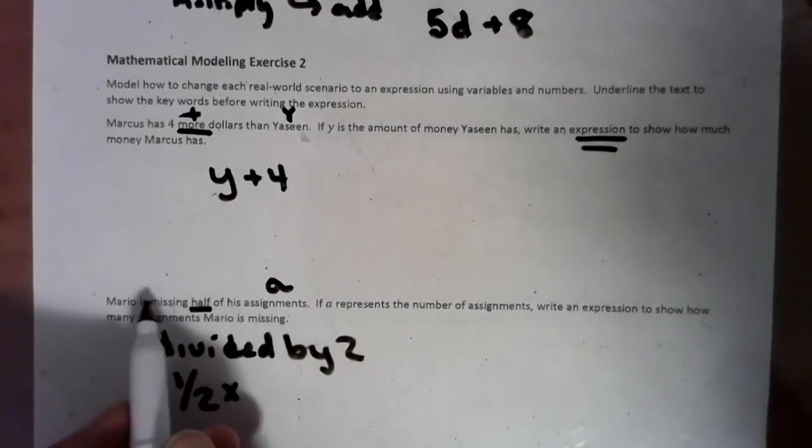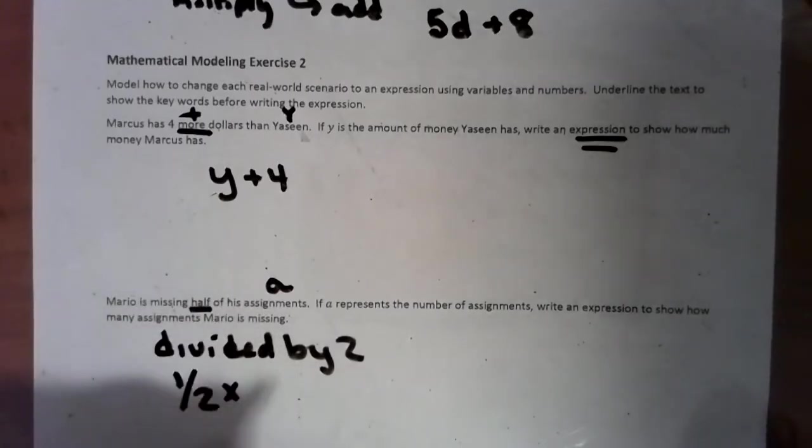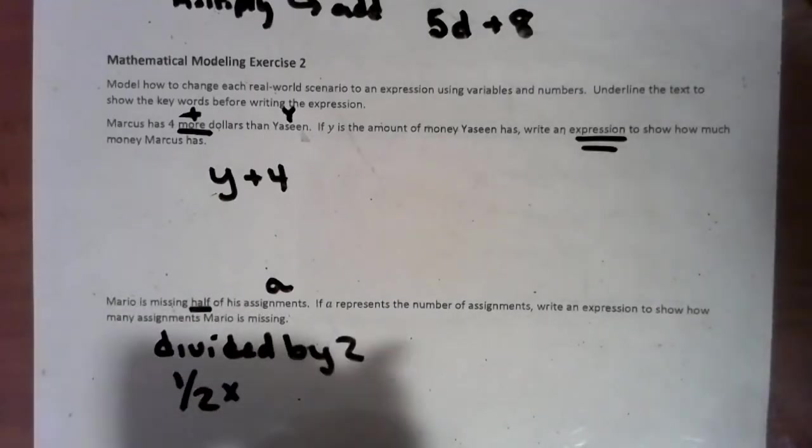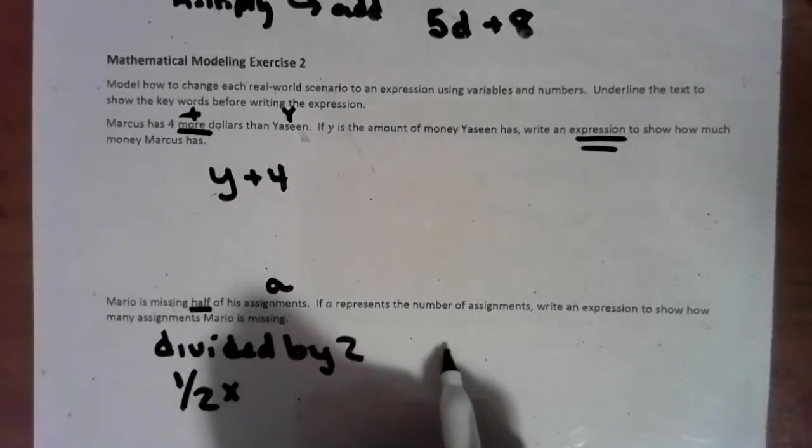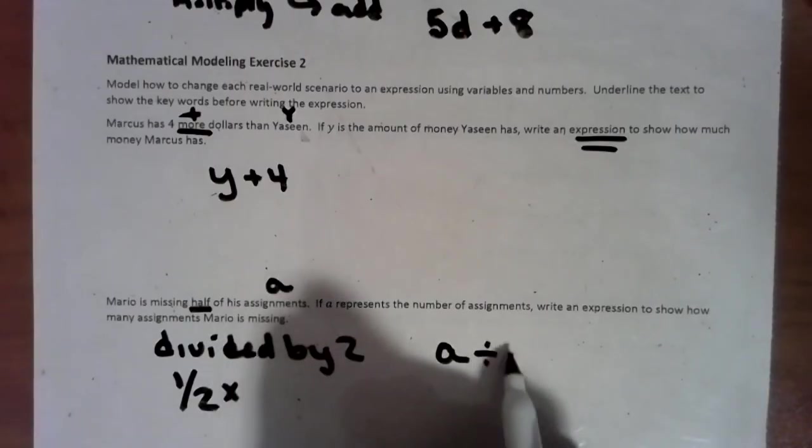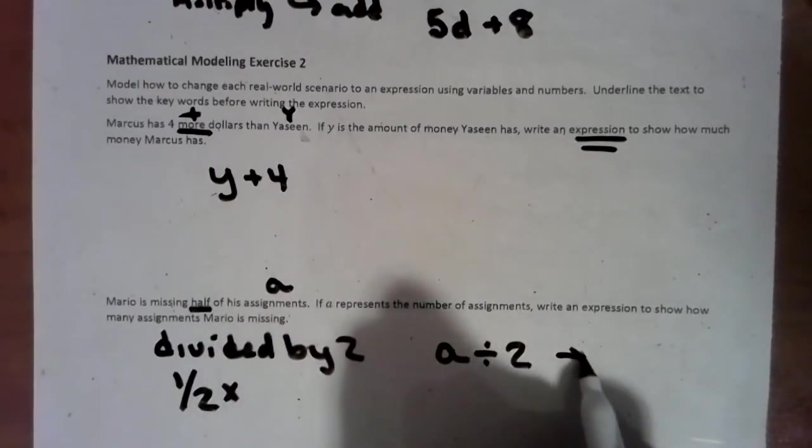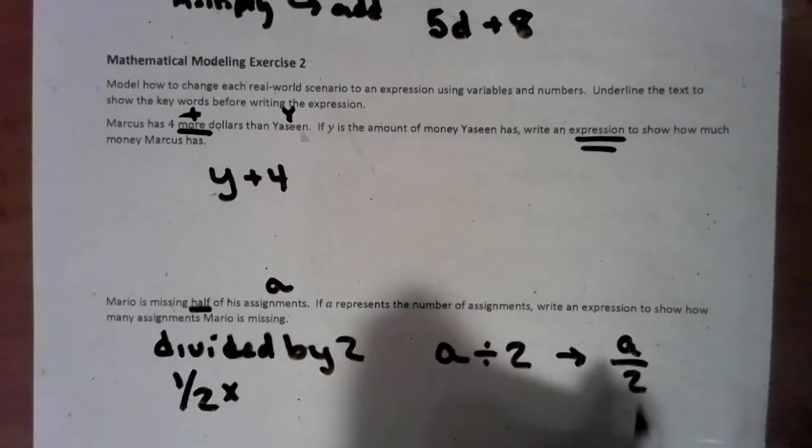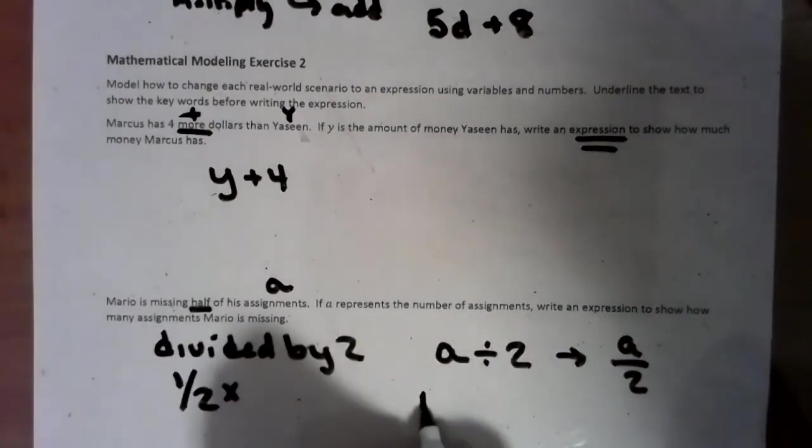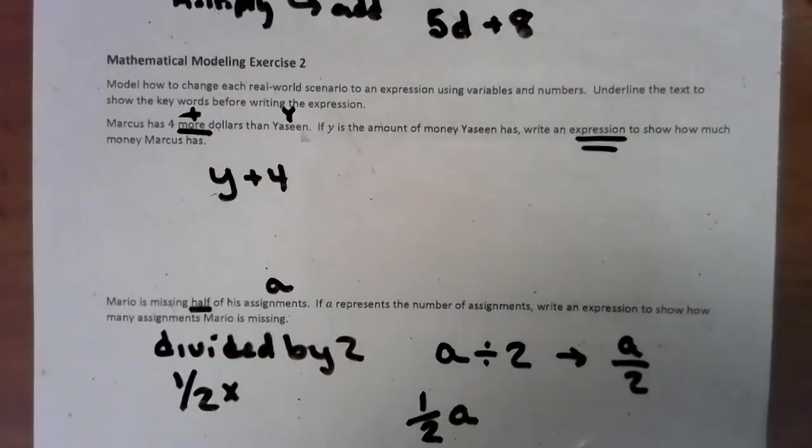So how does that look with Mario missing half of his assignments? He only did half. That's not too good. So half of his assignments, we can either have the assignments divided by two, which also can look like A divided by 2 if you want to make it look like a fraction, or we could do one-half of the assignments. So either way is accepted.